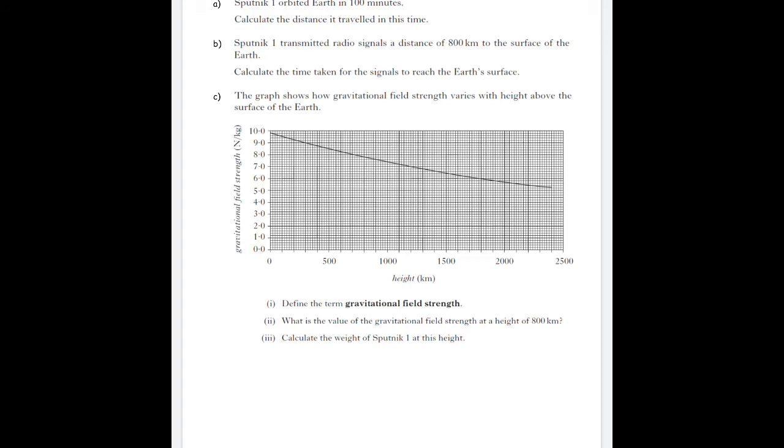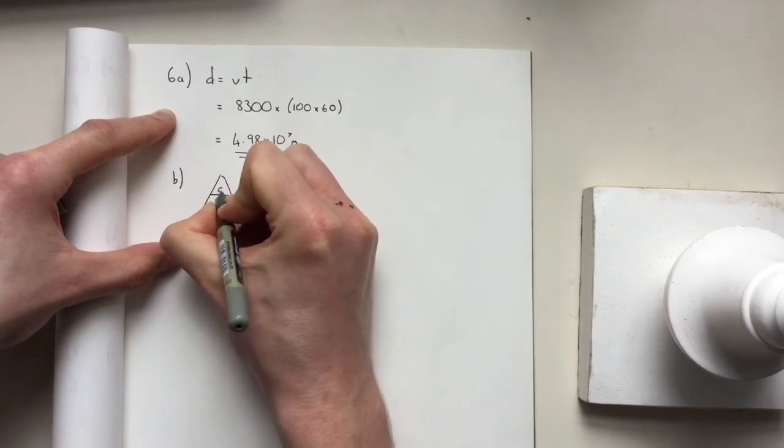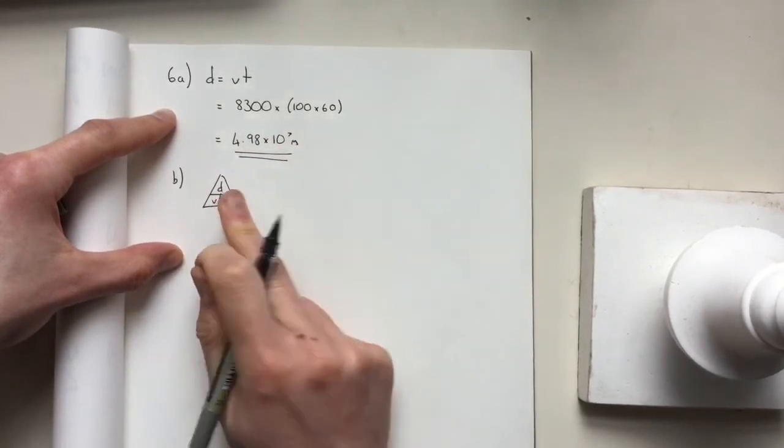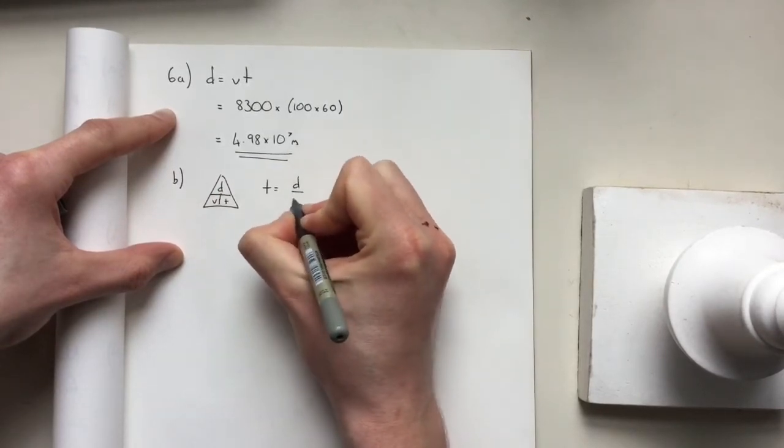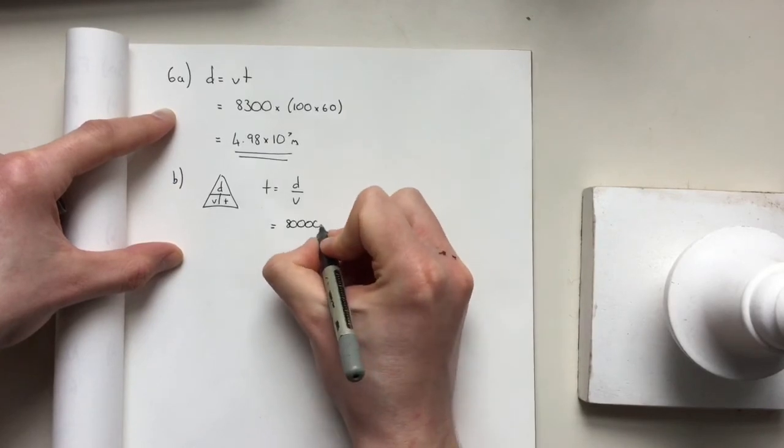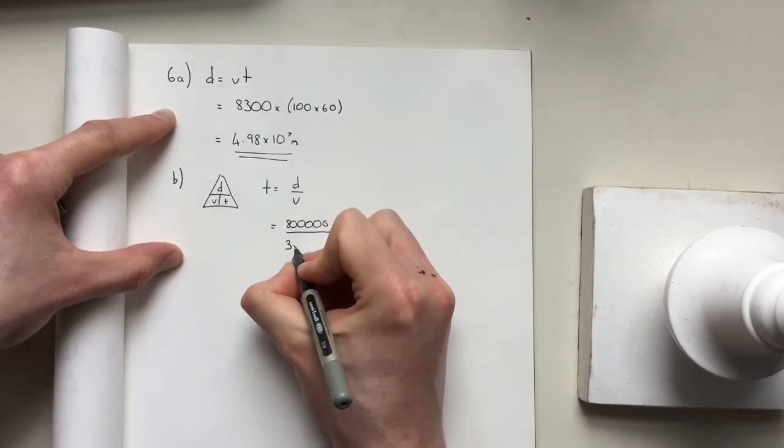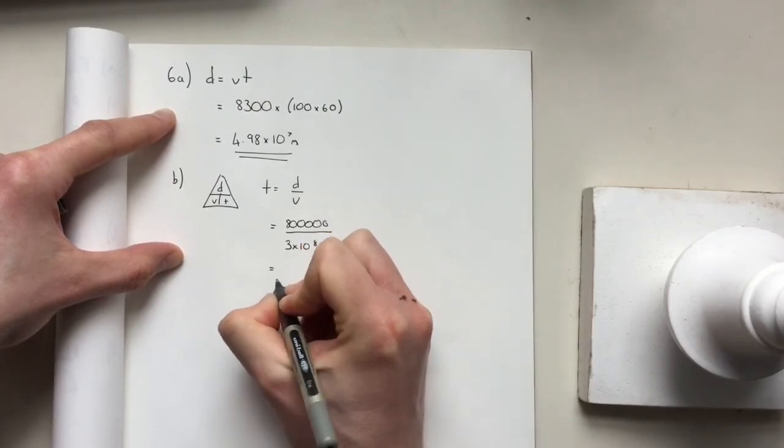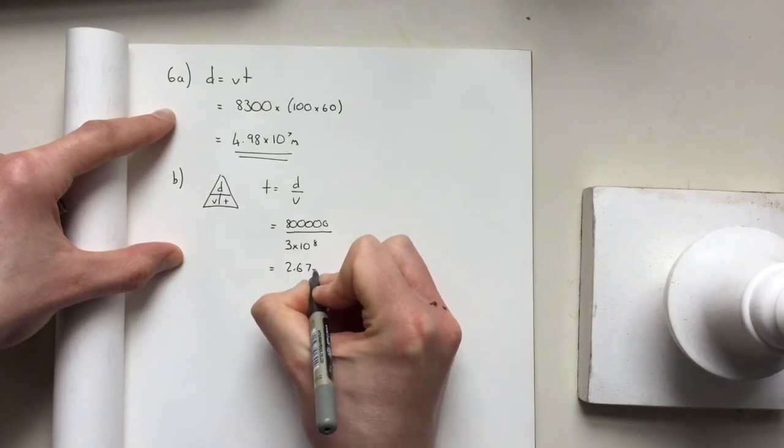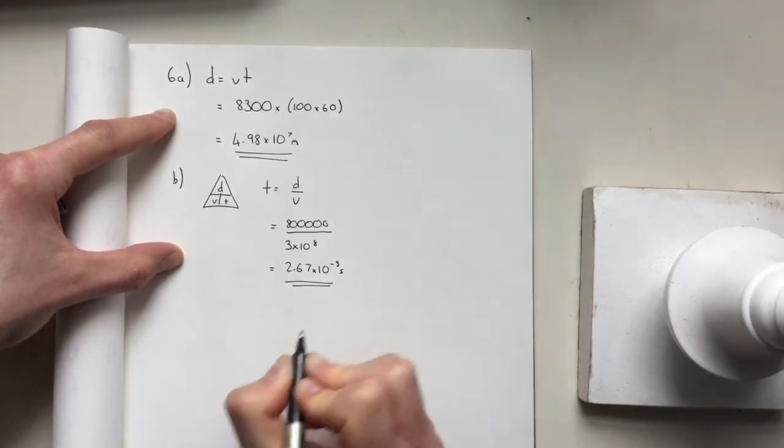B says, Sputnik 1 transmitted radio signals a distance of 800 kilometers to the surface of Earth. Calculate the time taken for the signals to reach the Earth's surface. Using our triangle D, V, and T, we know T equals D divided by V. The distance is 800,000 because kilometers is times 10 to the 3. Radio is an EM wave with the speed of light, 3 times 10 to the power of 8. We get 2.67 times 10 to the negative 3 seconds. Always put your answers in scientific notation when you can.